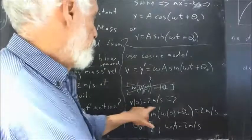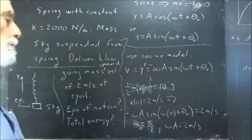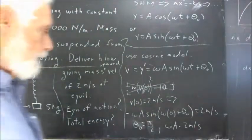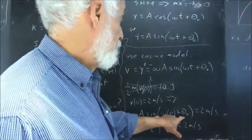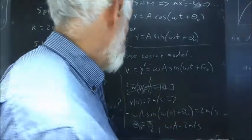And we know that v of 0 equals 2 meters per second. So, what we get is negative omega a sine of omega times 0 plus theta naught equals 2 meters per second.